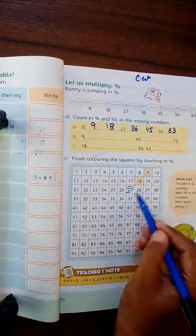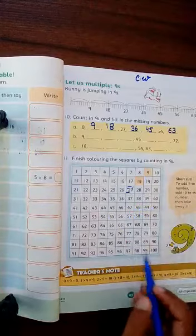9 times 6 is 54, the same color. You have to color it. Okay? And you have to read until 10.